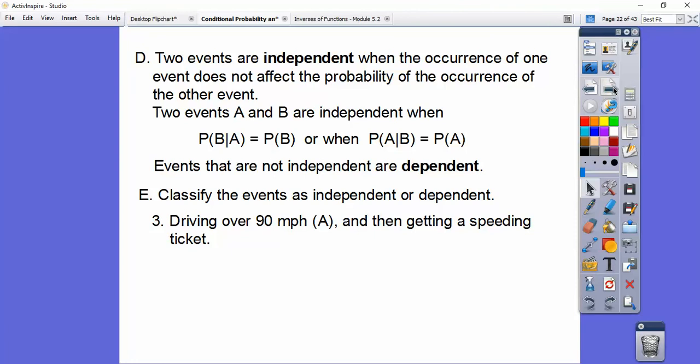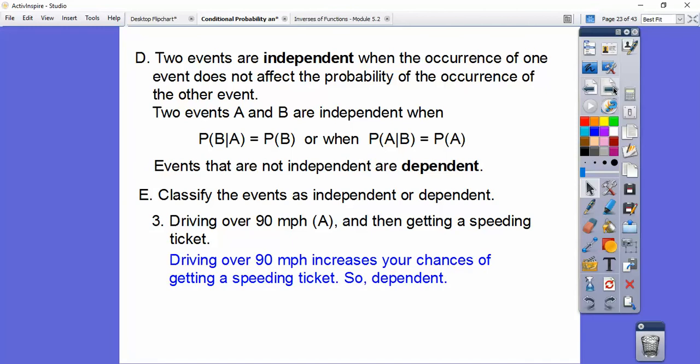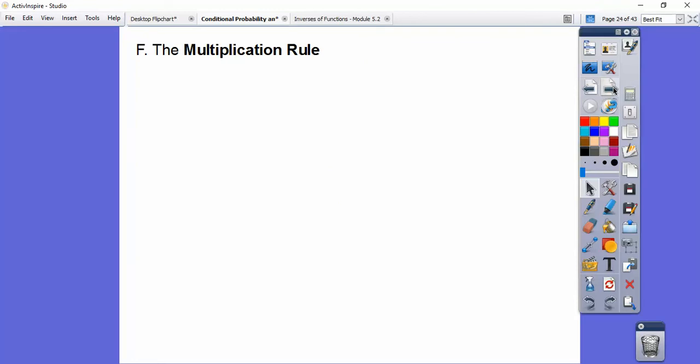How about this? Driving over 90 miles per hour is event A, and then getting a speeding ticket. Since driving over 90 miles per hour increases your chances of getting a speeding ticket, that one's probably going to be dependent.